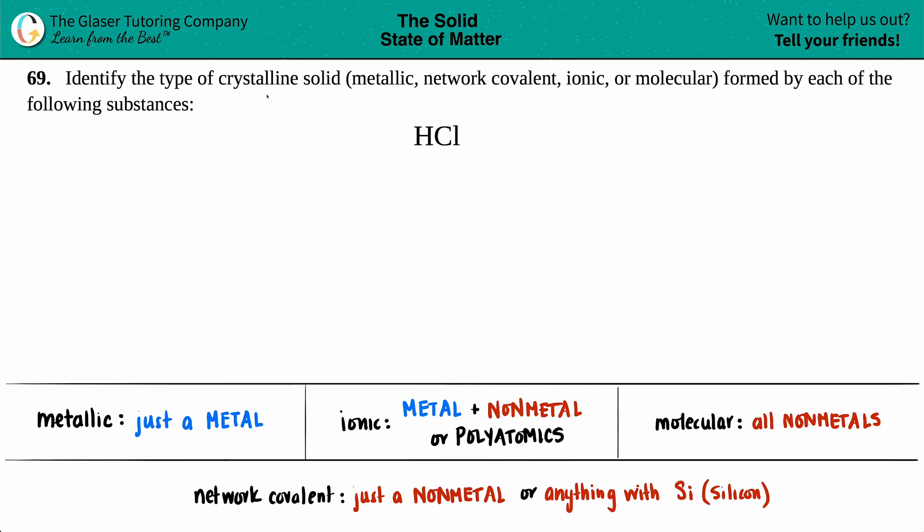Number 69, identify the type of crystalline solid, whether it's going to be metallic or a network covalent, ionic or molecular crystalline solid that's formed by each of the following substances. And then we have HCl.